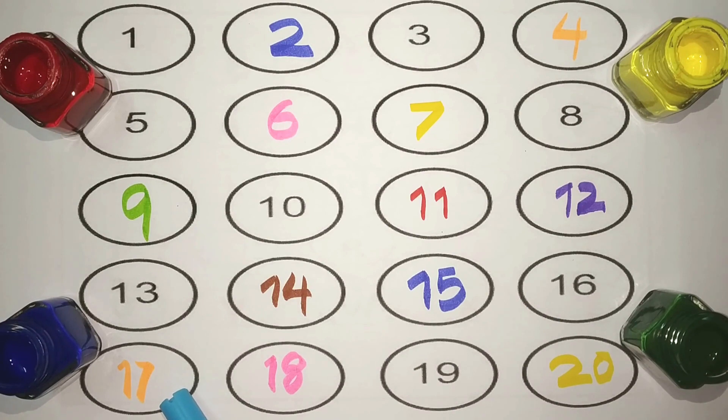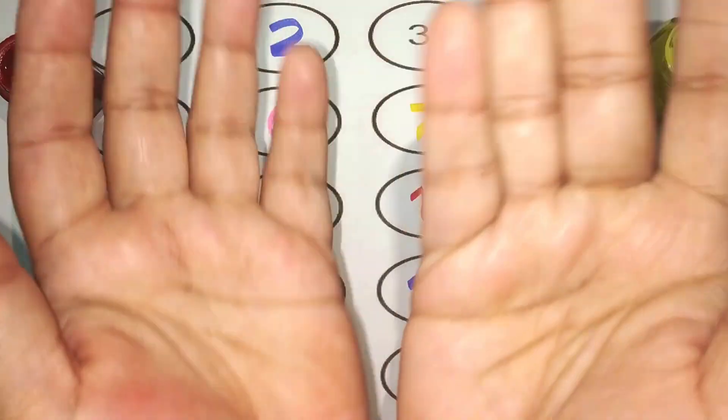One, seven, seventeen. Orange. One, eight, eighteen. Pink. One, nine, nineteen. Black. And two, zero, twenty. Yellow. Simple.